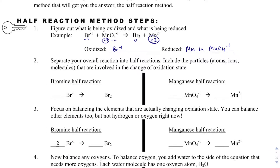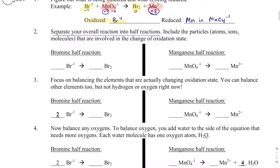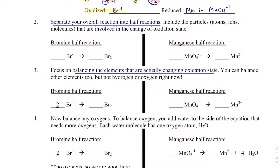Then I'm going to separate my overall reaction into half reactions. Bromine is being oxidized, so I find the bromine species and put them into one half reaction. Manganese is being reduced, so I'll have a manganese half reaction. Then I'm going to focus on balancing the elements that are actually changing oxidation state — we're not going to worry about hydrogen or oxygen right now. I've got 2 bromines, so I put a 2 there. And I have 1 manganese on each side, so that's balanced.